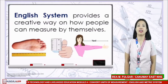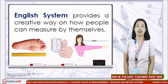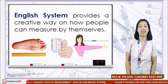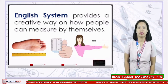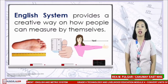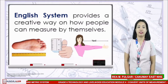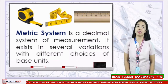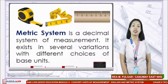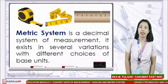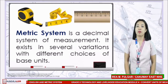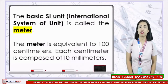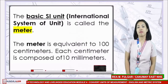The English system provides a creative way on how people can measure. For example, people measure a shorter distance on the ground with their feet. They measure shorter distances using their pace, which is equal to yard, inch, and mile. The other unit of measurement used is the metric system. It is a decimal system of measurement that exists in several variations with different choices of base units. The basic SI unit, or international system of units, is called the meter. One meter is equivalent to 100 centimeters, and each centimeter is composed of 10 millimeters.